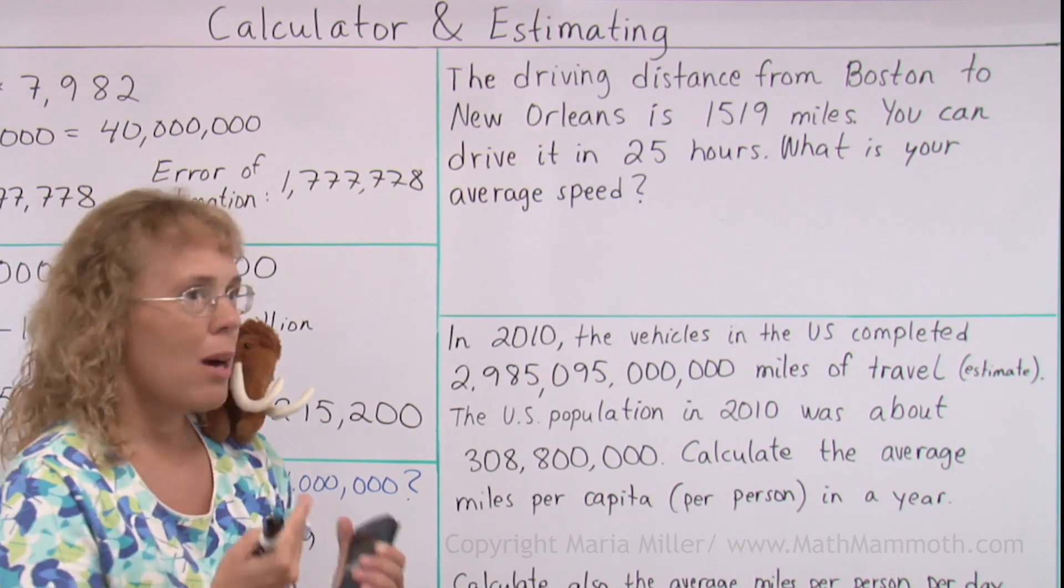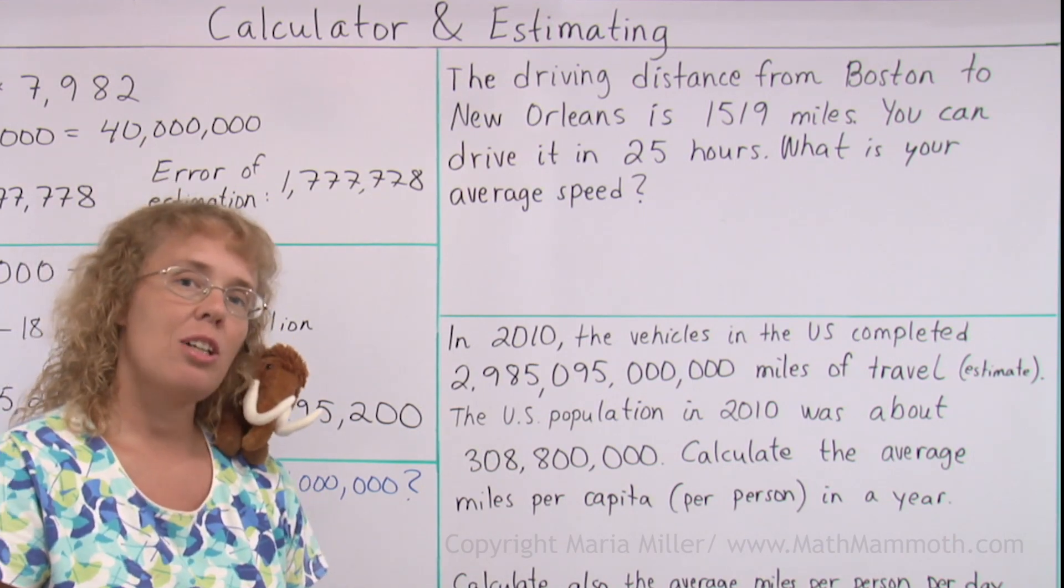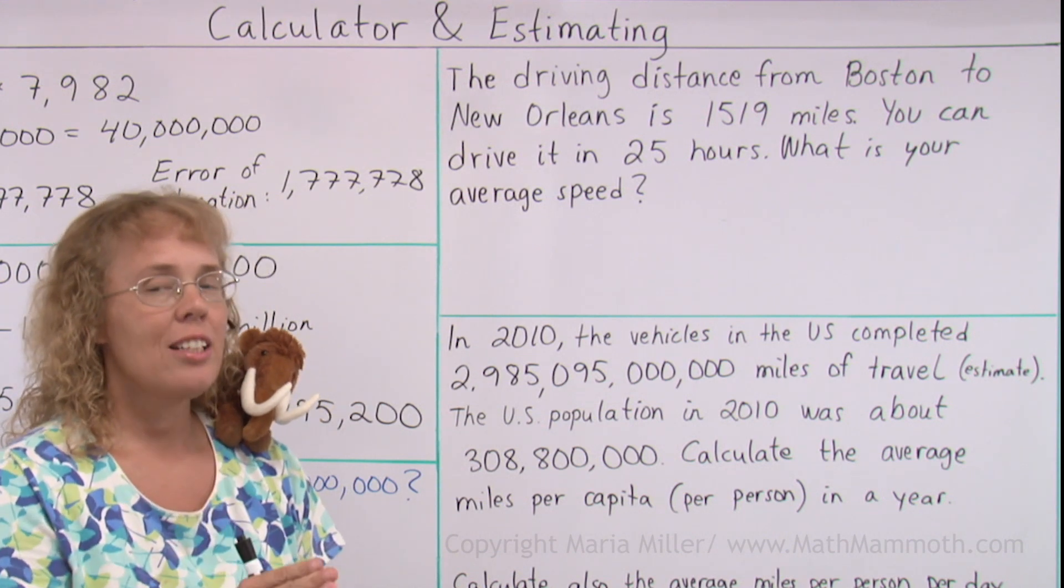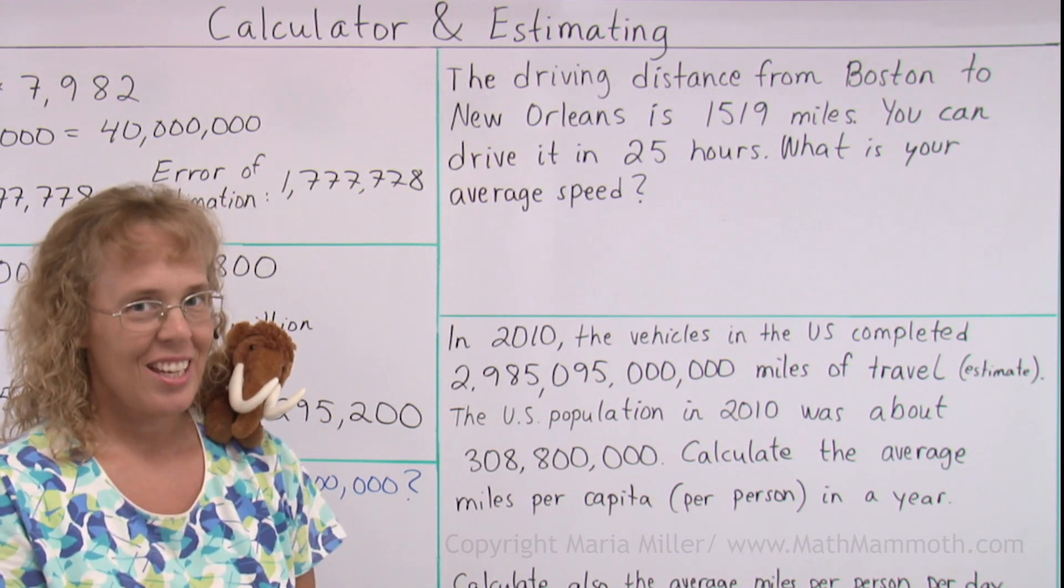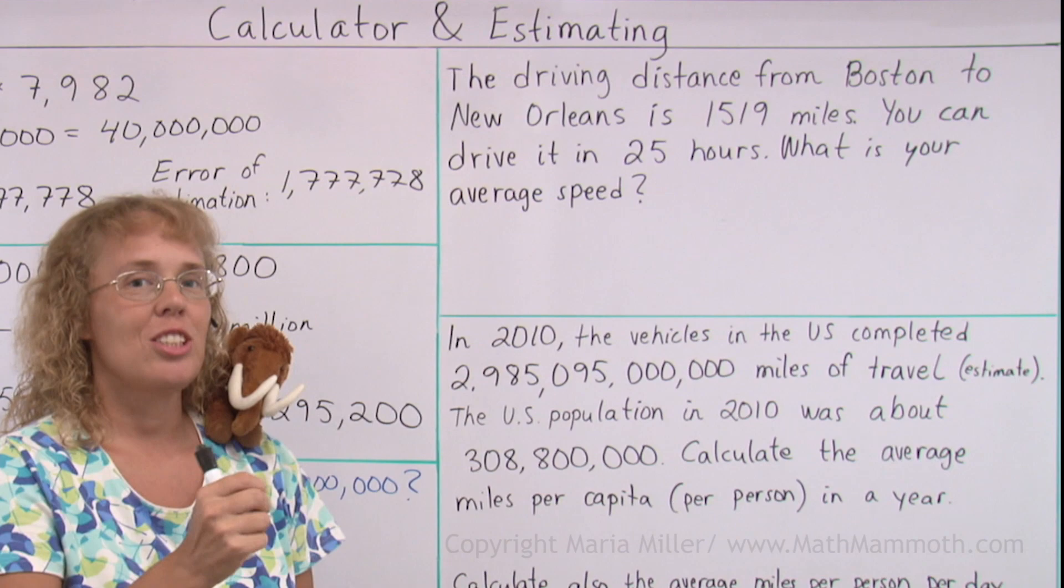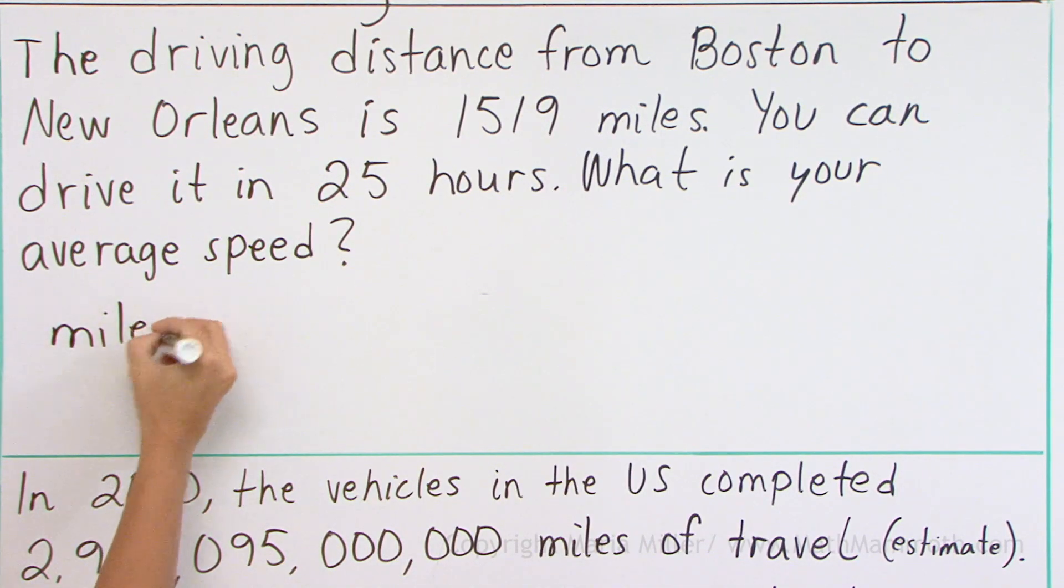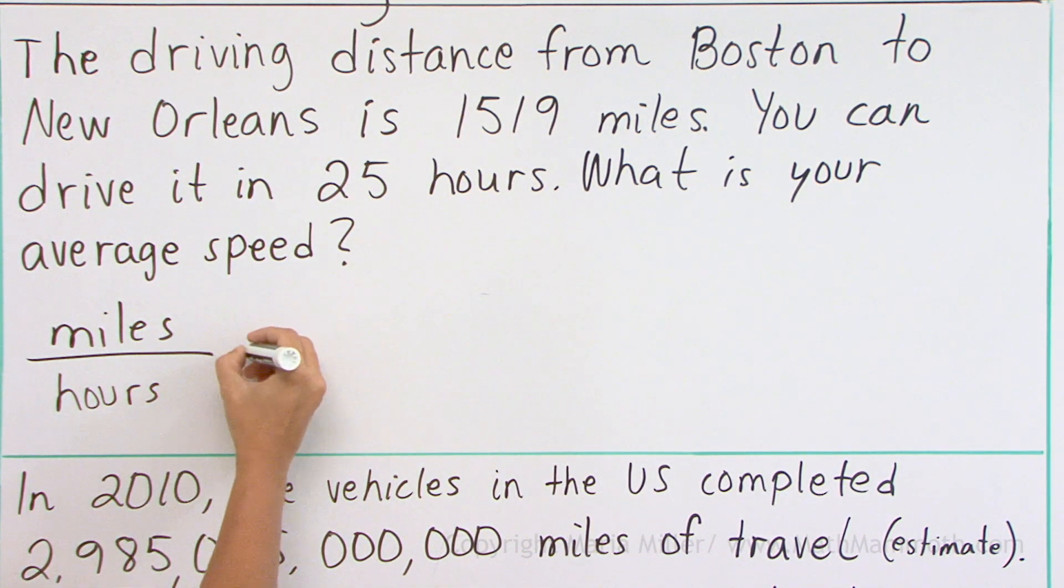Speed is always miles per hour and that tells you how to calculate speed. You take your miles and divide it by your hours. The per means division. Miles per hours is your average speed or speed.